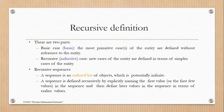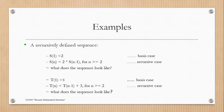A recursive sequence is an ordered list of objects which is potentially infinite. In a recursive sequence, we define the sequence recursively by explicitly naming the first value or some values in the sequence, and then defining the later values in terms of the earlier values. For example, in the first example here we have the base case.